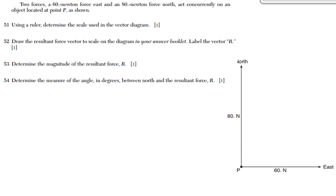Two forces, a 60 Newton force east and an 80 Newton force north, act concurrently on an object located at point P. For problem 51, using a ruler, determine the scale used in the vector diagram. Use your ruler and paper; you should get six centimeters for the 60 Newtons or eight centimeters for the 80 Newtons. You can set up a ratio or proportion, and you'll end up getting one centimeter equals 10 Newtons.